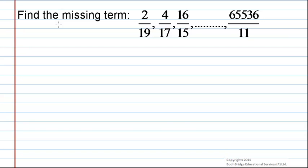Find the missing term: 2 by 19, 4 by 17, 16 by 15, missing value, 65536 divided by 11. By observing the given terms,